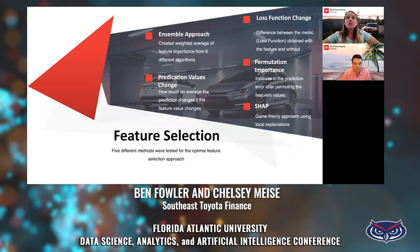An important part of the machine learning pipeline is figuring out which features need to end up in the final model. As a result of feature engineering, the data scientist may have hundreds, if not thousands, of features, and finding the most parsimonious and predictive feature set takes a lot of work. We tested five different approaches. The first was an ensemble approach creating a weighted average of feature importance from six different algorithms to get the feature set down to 100 features, then using XGBoost and SHAP to find the optimal feature set.